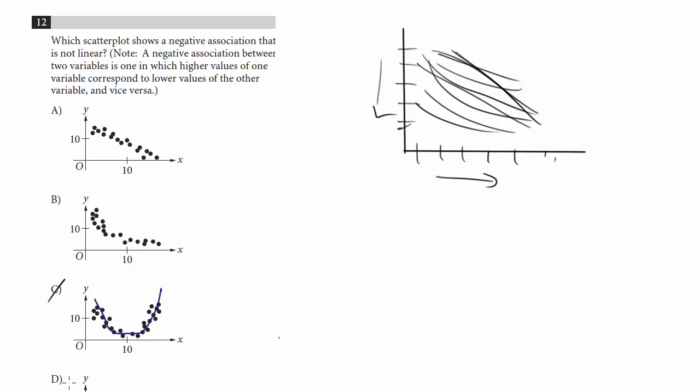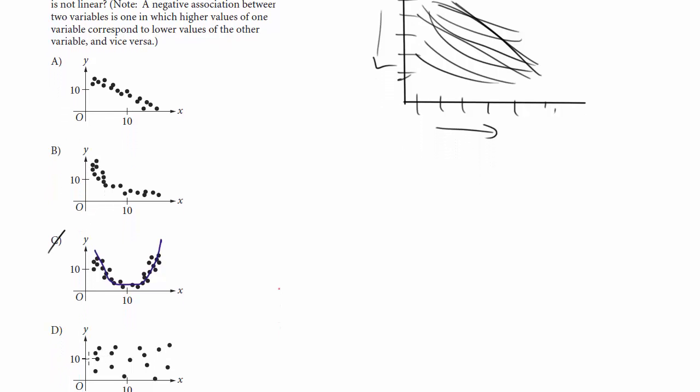And here, if we try to draw a best fit line, I guess we can do something like this. It's just not clear that there's really any relationship between the data at all. Certainly, it's not increasing as the other decreases. There's no negative association here, so we can get rid of D.